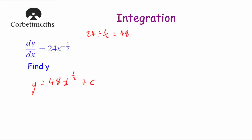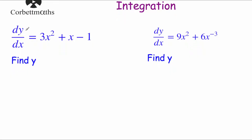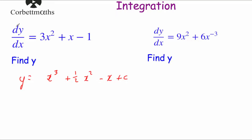Now let's look at questions with lots of different terms. We've got dy by dx equals 3x squared plus x minus 1. To integrate, we integrate each term separately. Starting with 3x squared: increase the power to x cubed, divide by 3 — so 3 divided by 3 is 1 — giving x cubed. Then x: increase the power to x squared, 1 divided by 2 is a half, giving a half x squared. Then minus 1: integrating a number gives minus 1x, or minus x. So y equals x cubed plus a half x squared minus x plus c.